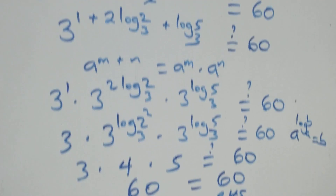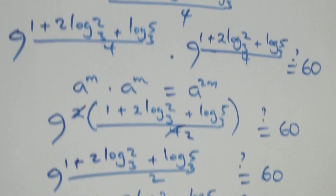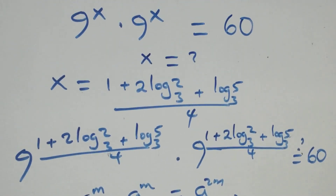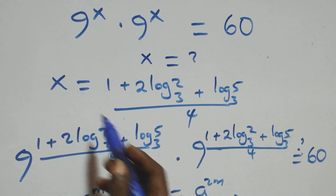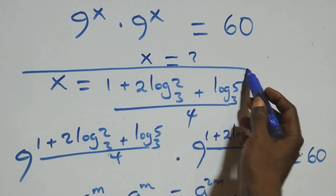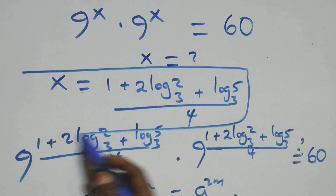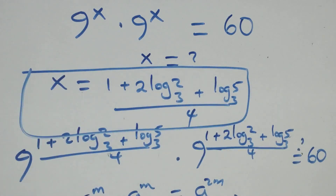Therefore we conclude that x equals to 1 plus 2 log 2 base 3 plus log 5 base 3, all over 4, satisfies the given problem. Thank you for watching — don't forget to subscribe for more videos, turn on the notification bell, share this video, give a thumbs up and put your comments. See you next class, bye for now.